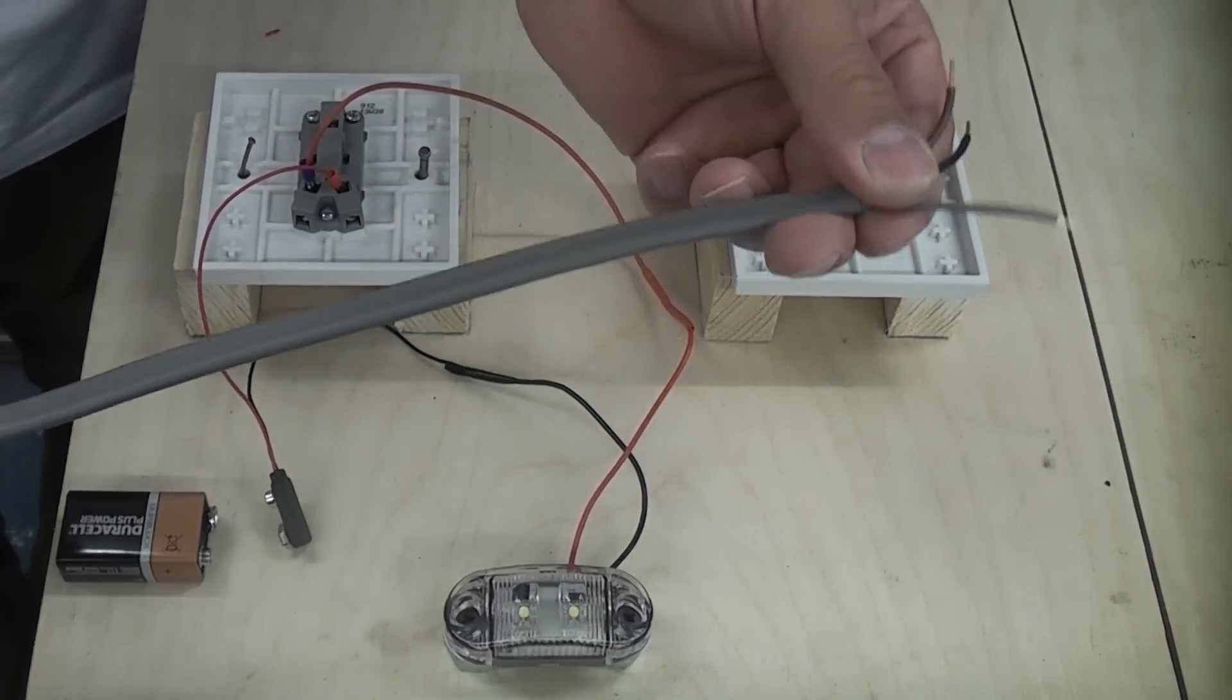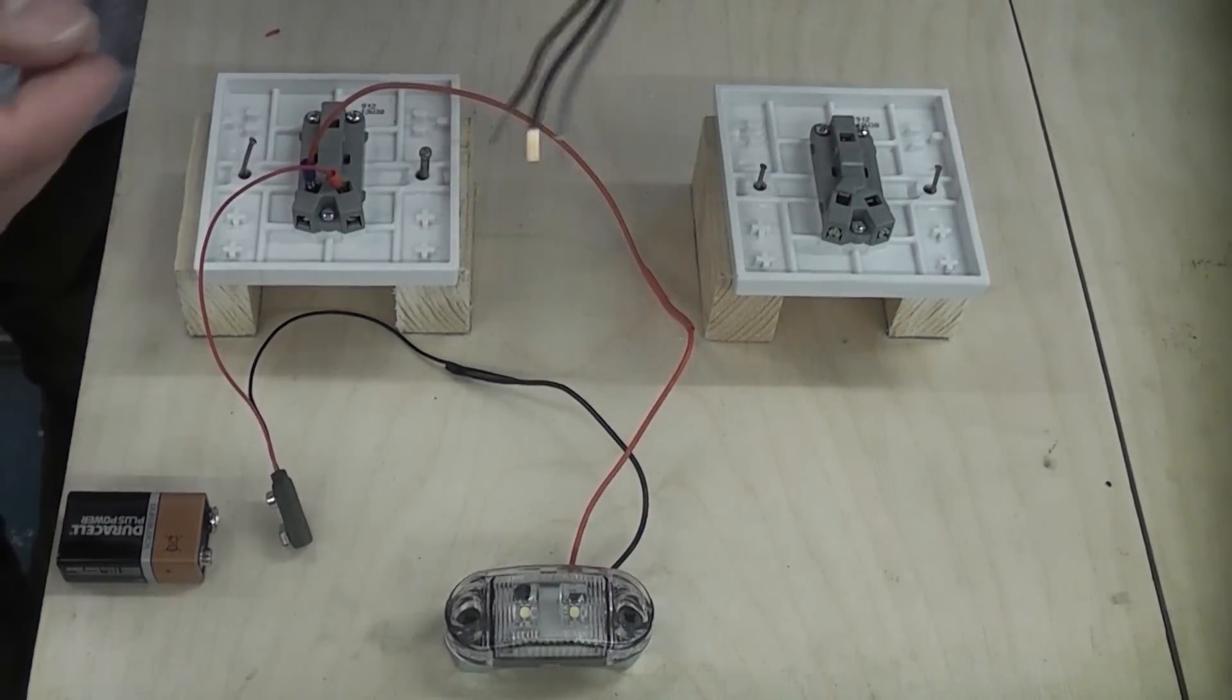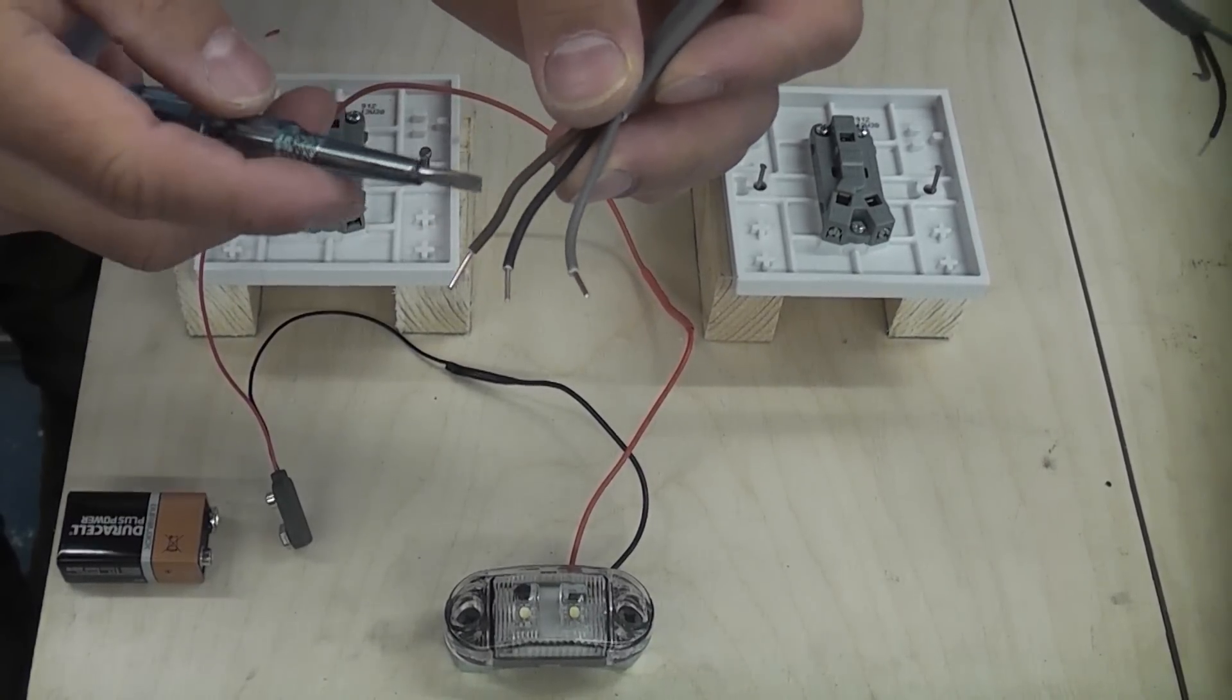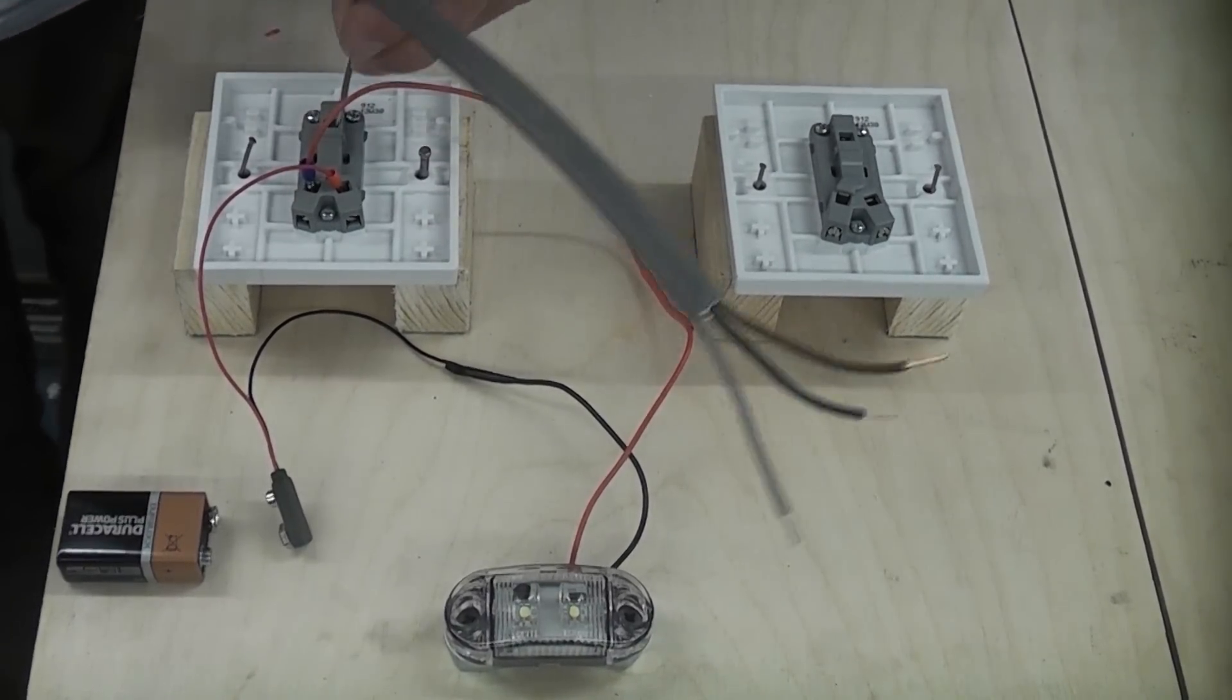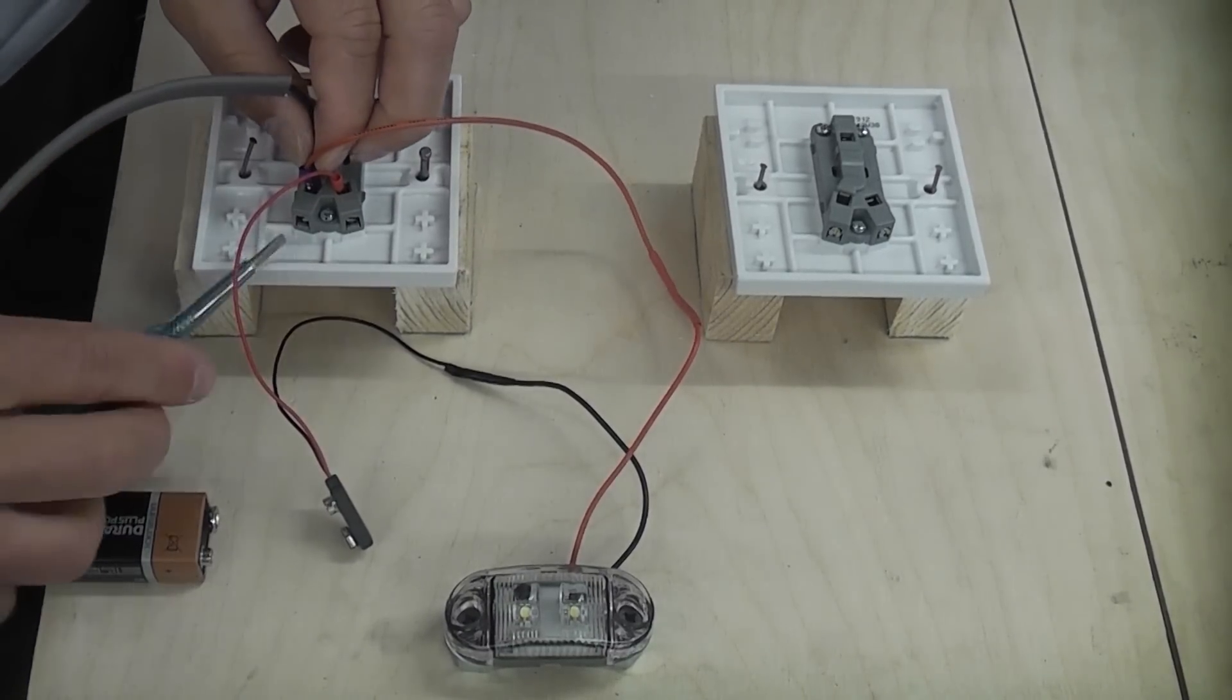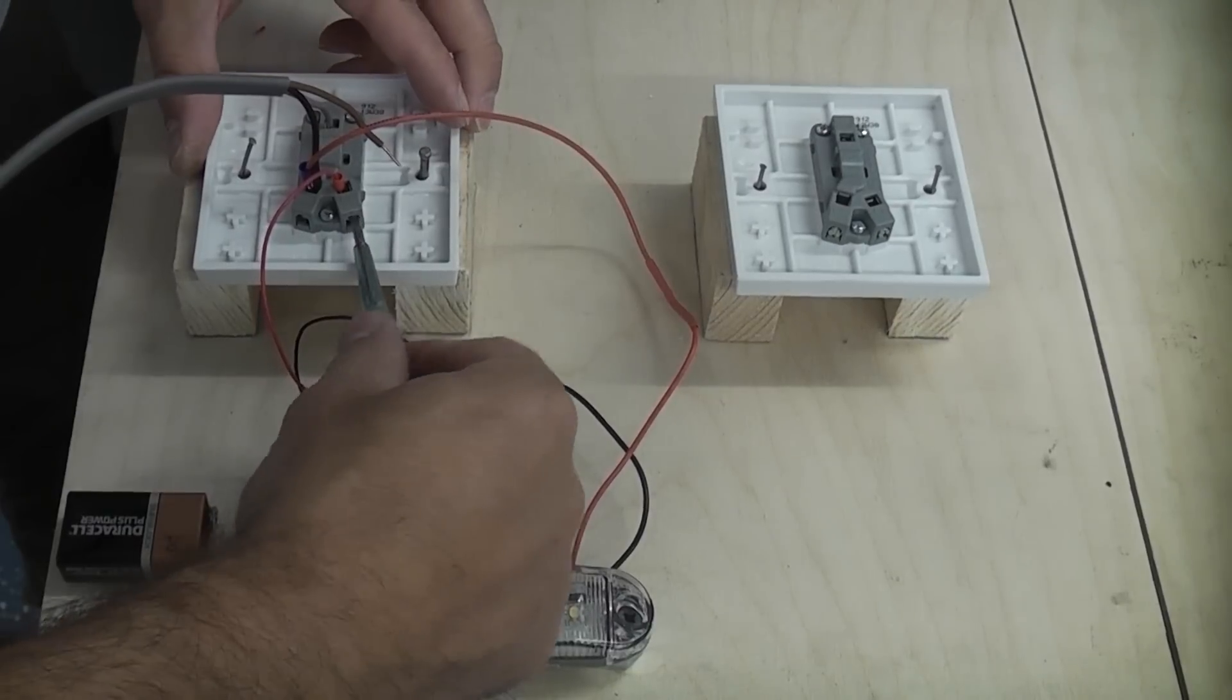Now all we need to do is get a piece of three core and earth cable. Obviously I've cut the earth off for this demonstration. You'll then notice that we have three different colors. All we need to do is choose a color. You would normally sleeve these to indicate that each one of these wires will be live at some point. So we're going to take the gray, I'm going to put that in the comm terminal. I'm then going to take the black and I'm going to put that in the L2 terminal with the other wire there.